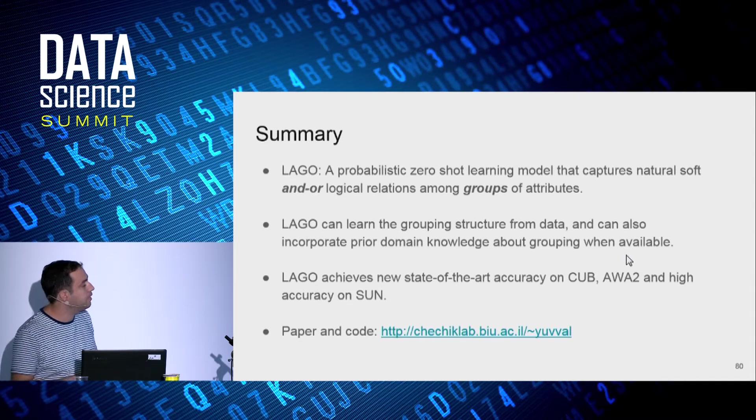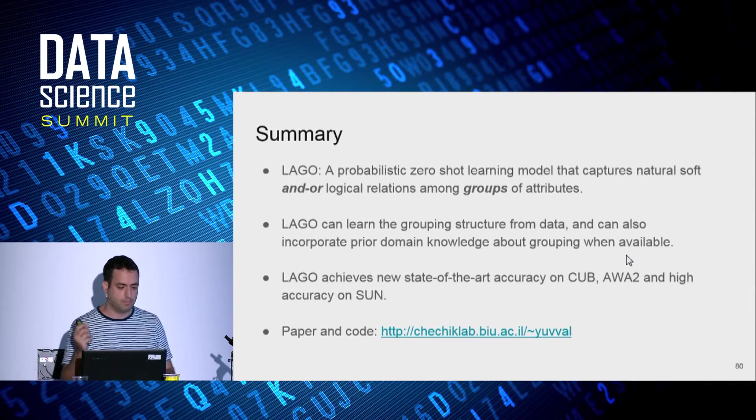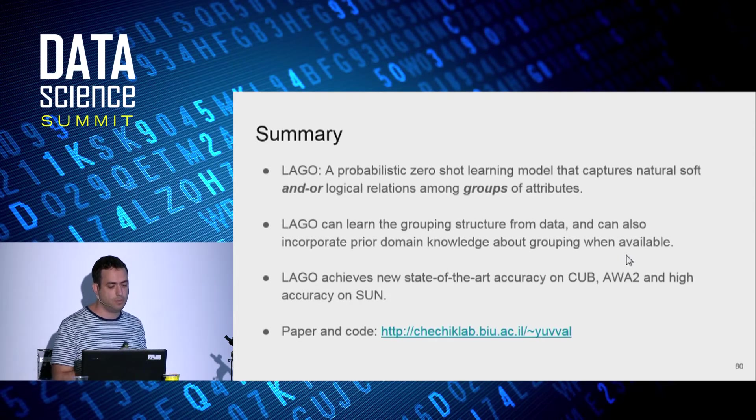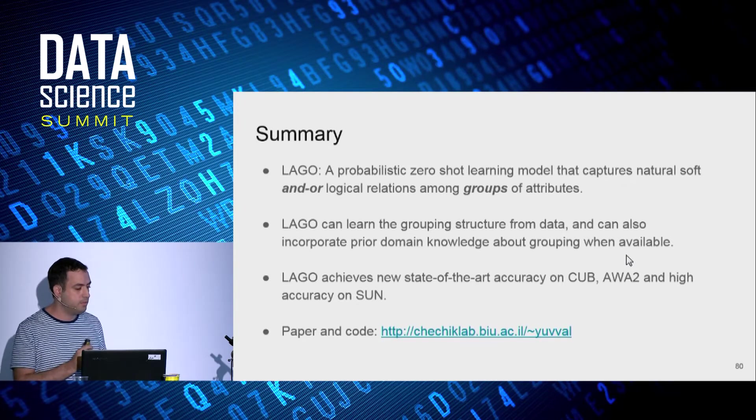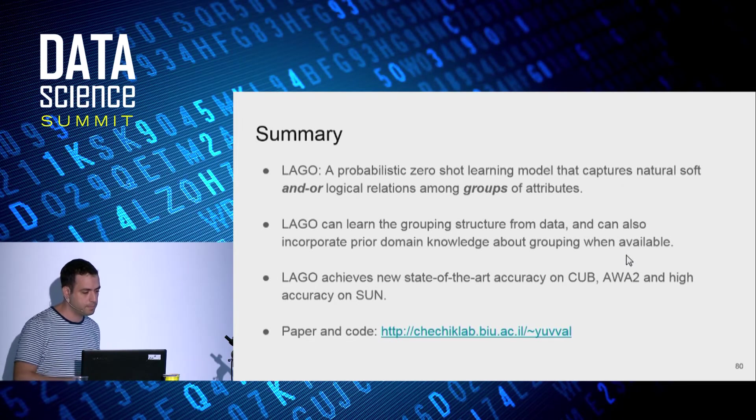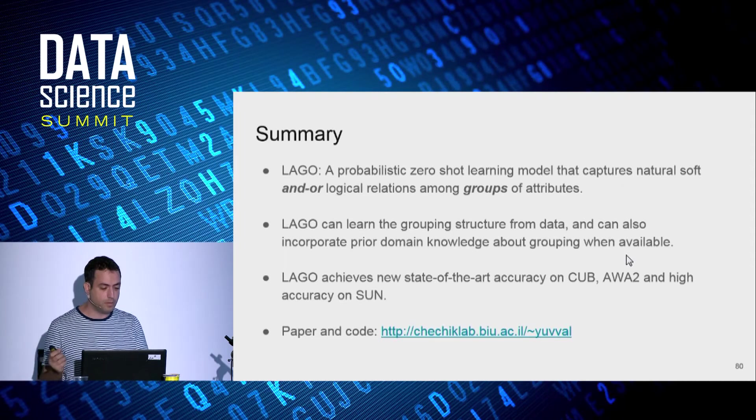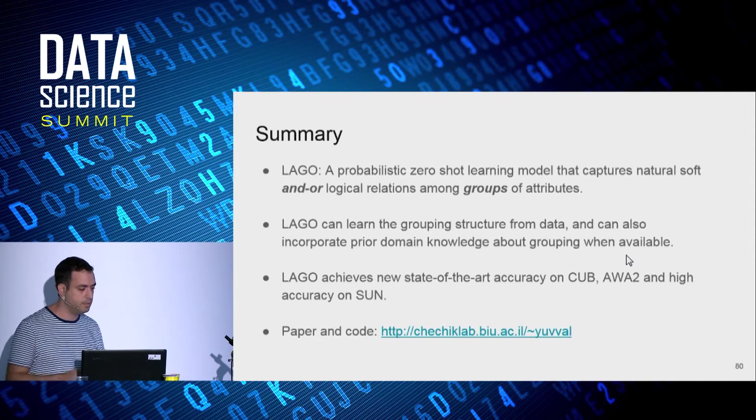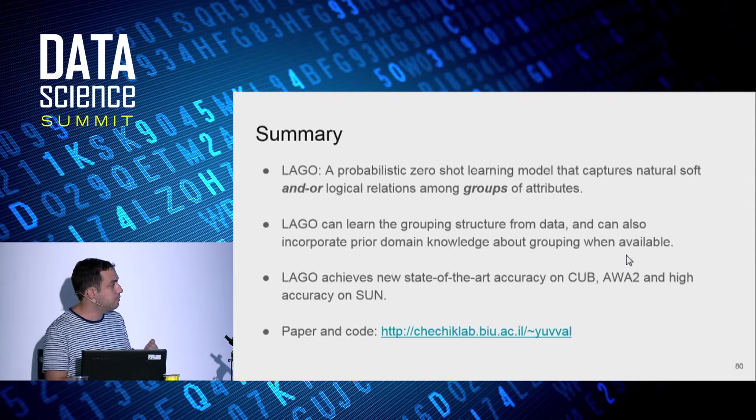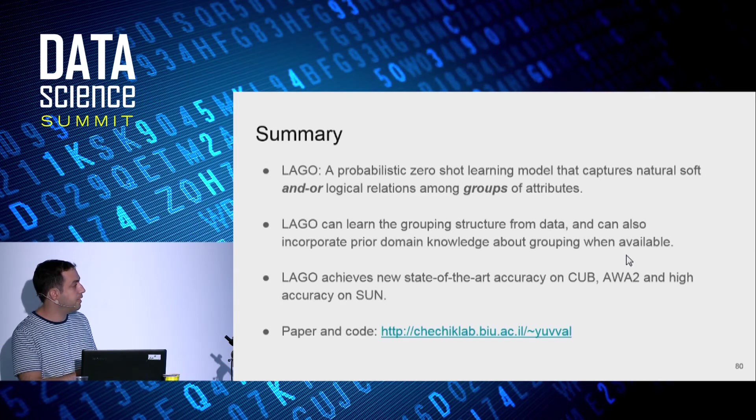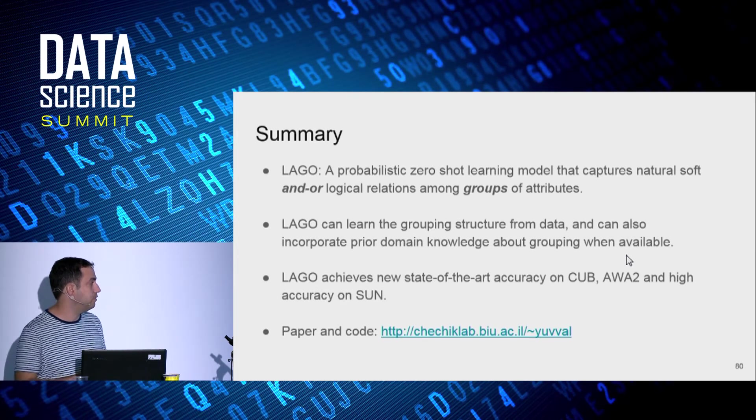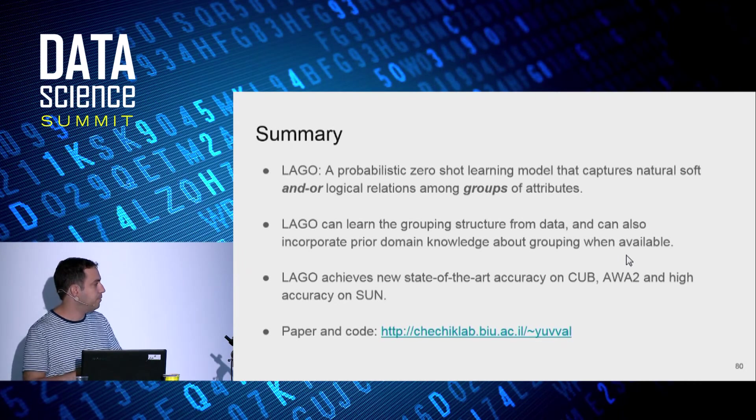So summary, let's sum it up. LAGO is a probabilistic zero-shot learning model. It captures natural, soft, AND-OR logical relations among groups of attributes. It can learn grouping structure from data. And it can also incorporate prior domain knowledge about grouping when it's available. LAGO achieves new state-of-the-art accuracy on CUB, AWA, and high accuracy on SUN. Paper and code. And thank you.